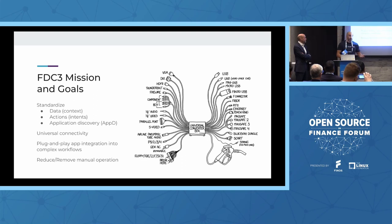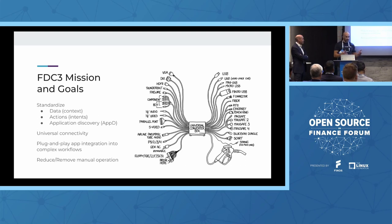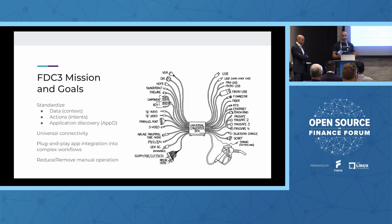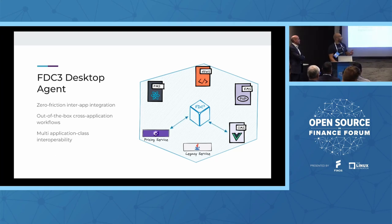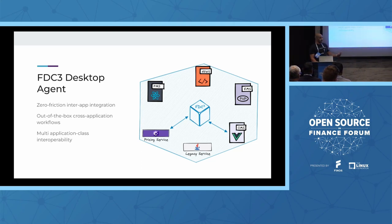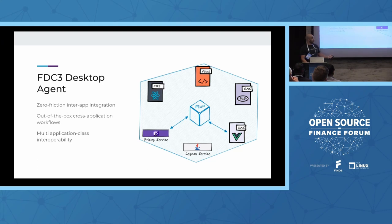FDC3 came about because we needed a way to increase productivity, streamline workflows, and be faster at decision-making. FDC3 proposes to standardize — standardize data, standardize actions, and standardize application discovery. This provides universal connectivity between apps working under the same desktop. It offers plug-and-play app integration into complex workflows and tries to reduce or even completely remove manual interaction.